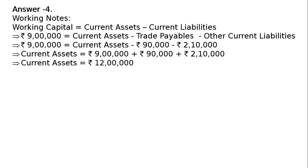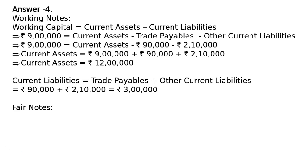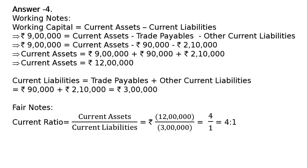Now we find current liabilities. Current liabilities equals trade payables plus other current liabilities, that is rupees 90,000 plus rupees 2 lakh 10,000, which equals rupees 3 lakhs.